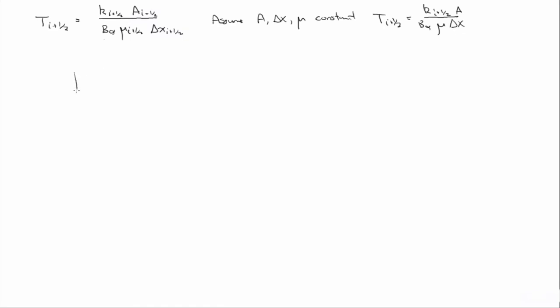If we look at two grid blocks from i to i plus one, where k at i is not equal to k at i plus one, we have some heterogeneity in the permeability.